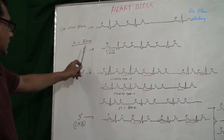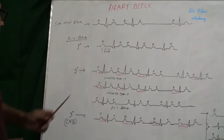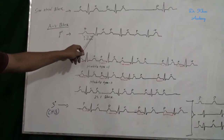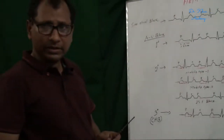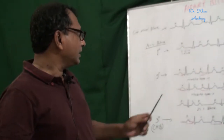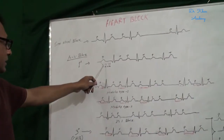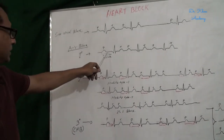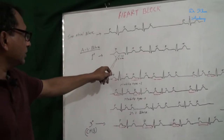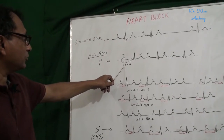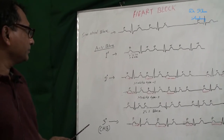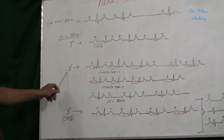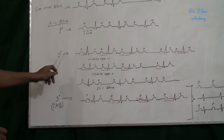In first degree block, conduction is delayed in the AV node, so the PR interval is prolonged. Normally the PR interval is less than 5 small squares, that is less than 0.2 seconds, but in first degree block the PR interval is more than 0.2 seconds — more than 5 small squares.